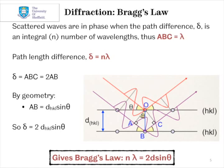And you can see that for these waves to be in-phase when they're scattered, the purple wave is going to have to travel an extra distance, ABC, that is equal to an integer number of wavelengths, nλ.